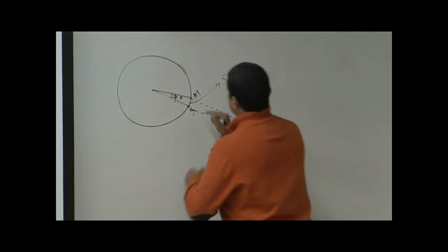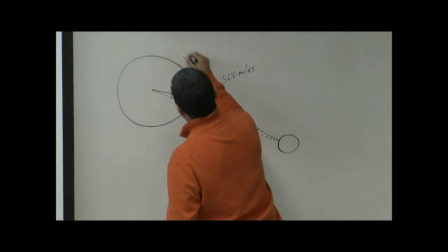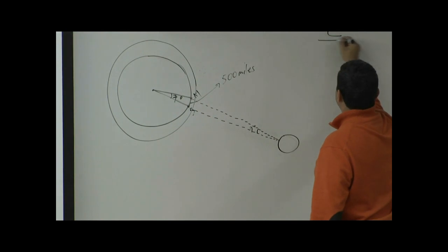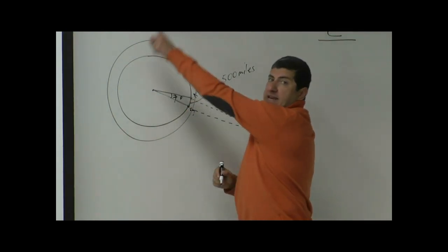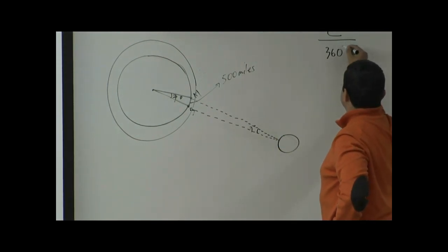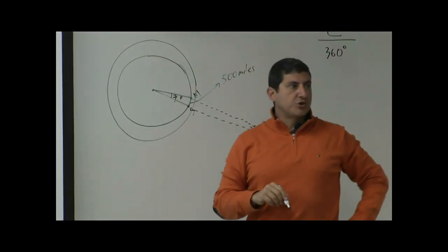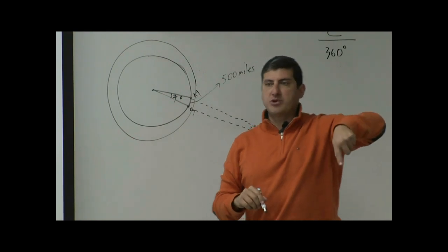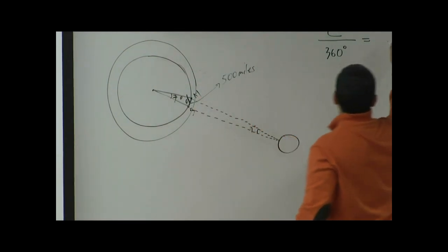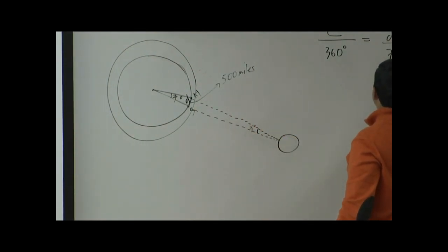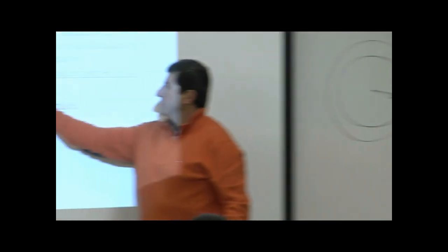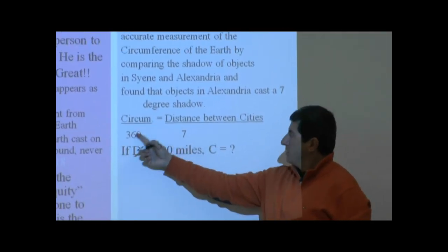Then he makes a ratio. He says, if I'm going to calculate the circumference of the Earth, I'm going to make a ratio. Circumference of the Earth divided by - how many angles does a whole circle have? 360. So the circumference of the Earth divided by 360 is equal to the distance between the two cities divided by seven degrees. So that's basically what this is. You can make a ratio.